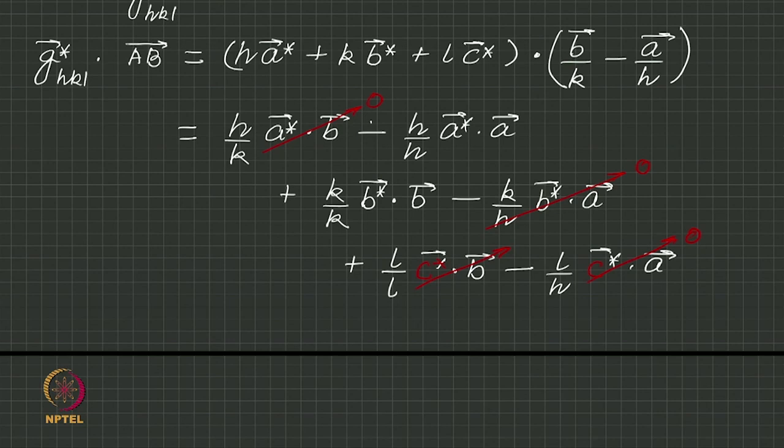You can see that only two terms are left, two non-zero terms. First one is h by h a dot a star dot a with a minus sign, so that is minus 1. The second one is k by k b star dot b, that is plus 1. So minus 1 plus 1, that is 0.